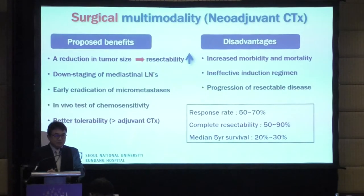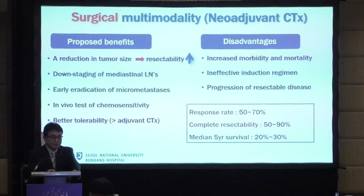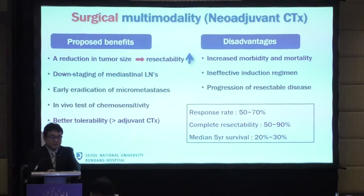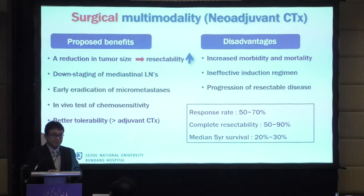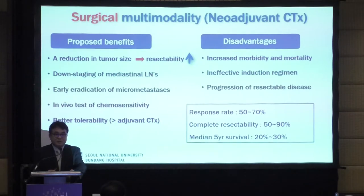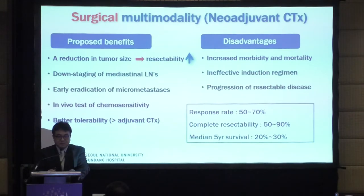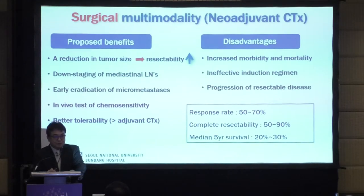How about the potentially resectable N2? Surgical multi-modality therapy is usually recommended, which means neoadjuvant chemotherapy. Proposed benefits include reduction in tumor size to increase resectability, downstaging mediastinal lymph nodes, early eradication of micrometastasis, and an in vivo test for chemo sensitivity. It is better tolerated than adjuvant chemotherapy. Potential disadvantages include increased morbidity or mortality during surgery, ineffectiveness, and sometimes disease progression during the neoadjuvant period.